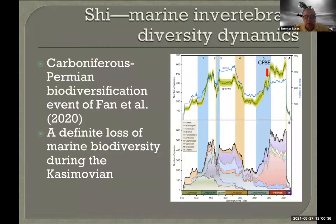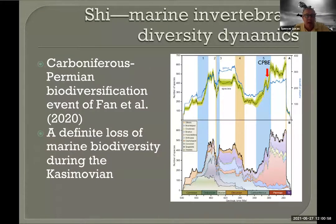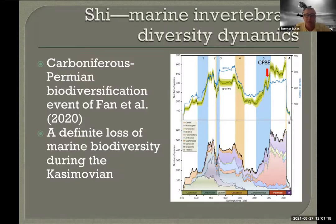Yu Kun Shi presented a very interesting discussion of what I would call a relatively new Chinese database on biodiversity or palaeodiversity. I hope somebody uploaded the Fon et al. paper to the Dropbox — hopefully Yu Kun did — but this is a paper that really bears looking at. What it shows is what's called the Carboniferous-Permian biodiversification event, where diversity is increasing pretty much steadily through the Carboniferous up to the early Permian, but there is a significant drop in the Casimovian, which she drew our attention to.